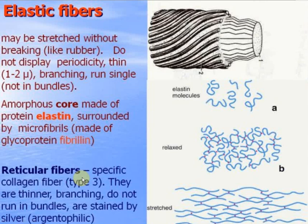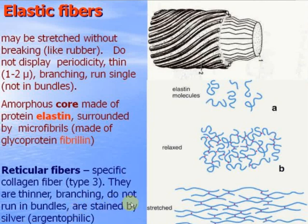There are also reticular fibers. They consist of specific collagen fibers from collagen type 3. They are thinner, branching, and do not run in bundles. They stain by silver, unlike collagen fibers.